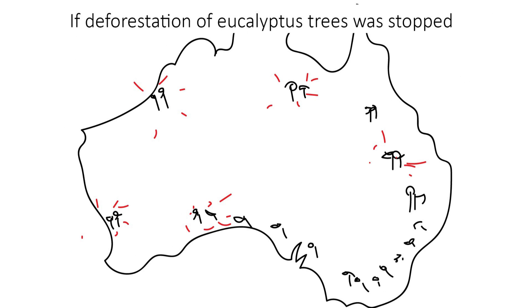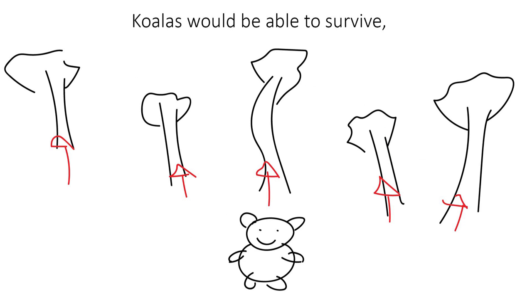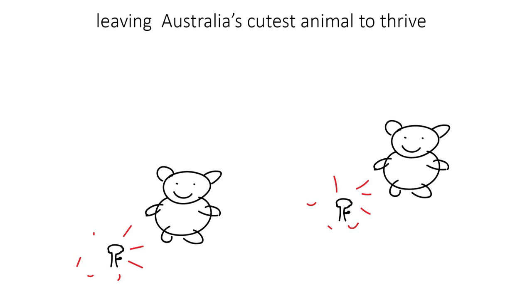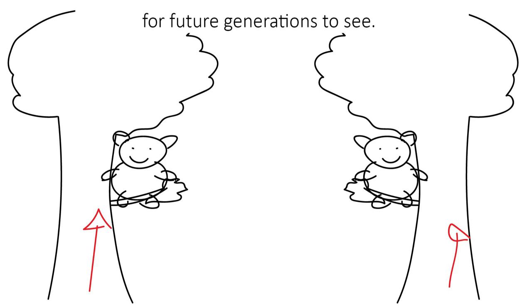If deforestation of eucalyptus trees is stopped, koalas would be able to survive, leaving Australia's cutest animal to thrive for future generations to see.